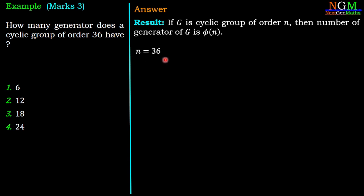Here n equals 36. φ(n) equals φ(36), equal to φ(9 × 4). Now, φ(m × n) equals φ(m) × φ(n) if gcd(m,n) equals 1.